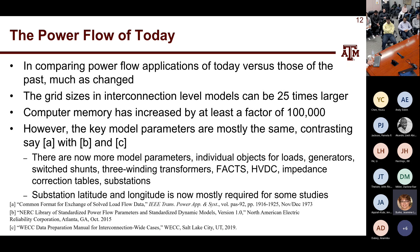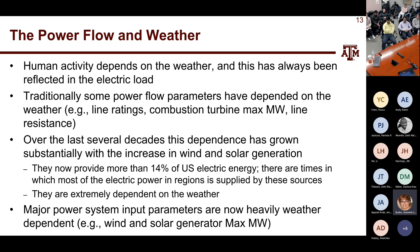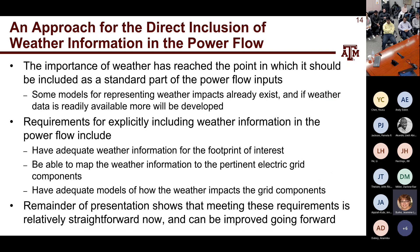Human activity depends on weather, and some traditional parameters like line ratings depend on weather. Now, with all this renewable generation, weather is playing a major role. So we're putting it in. If you want to put weather in the power flow, you need: weather information, the ability to map it to pertinent grid components, and adequate models of how weather impacts grid components. The remainder of the presentation will show that this is pretty straightforward to do.